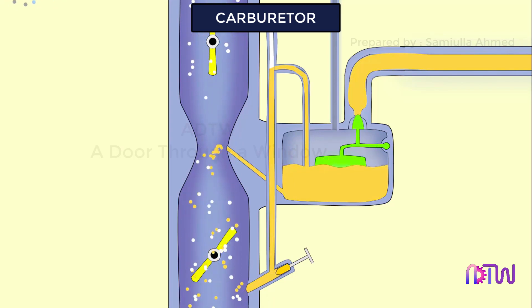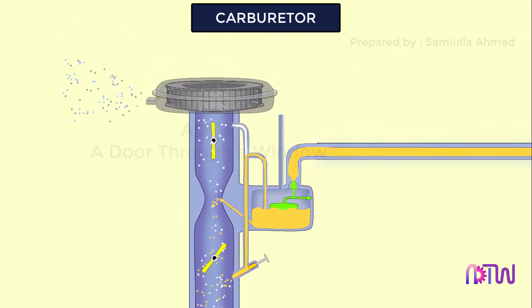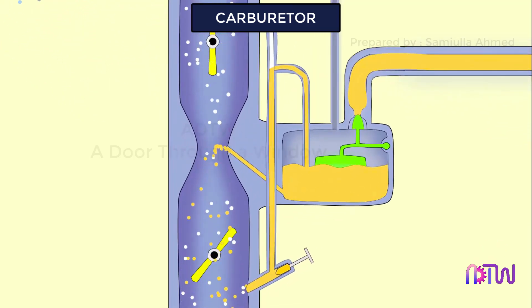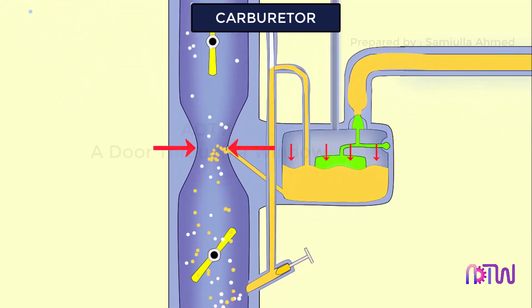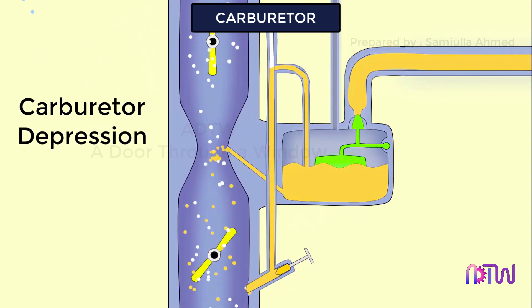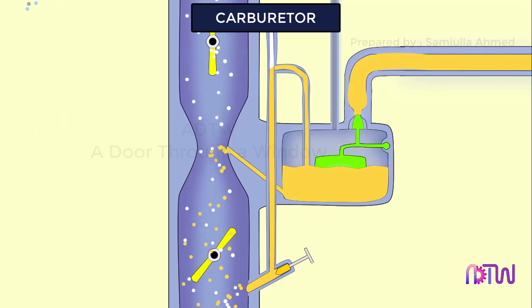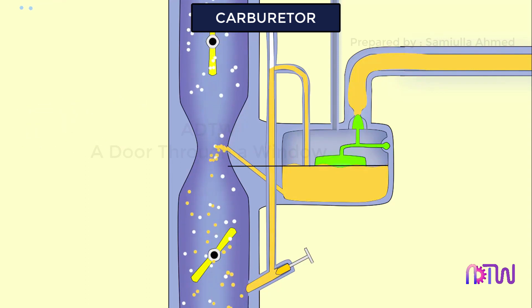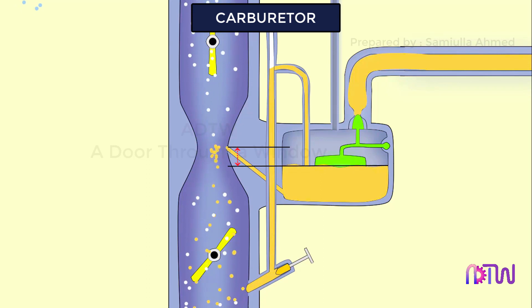This uniformly mixed air-fuel mixture, also known as charge, is fed into the engine cylinder. The pressure difference between the float chamber and the throat of the venturi is known as carburetor depression. To avoid overflow through the jet, the fuel level inside the float chamber is maintained slightly below the tip of the fuel discharge nozzle.